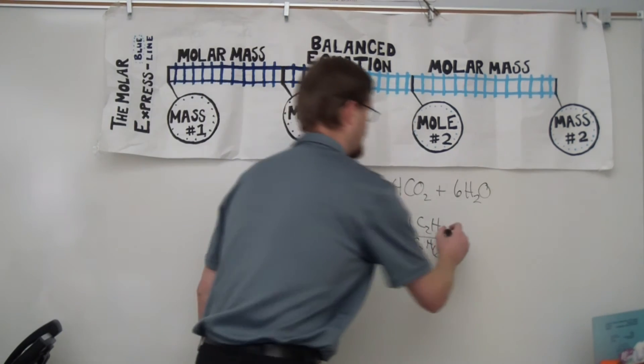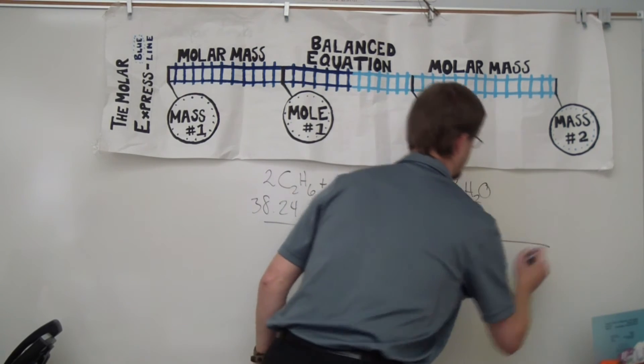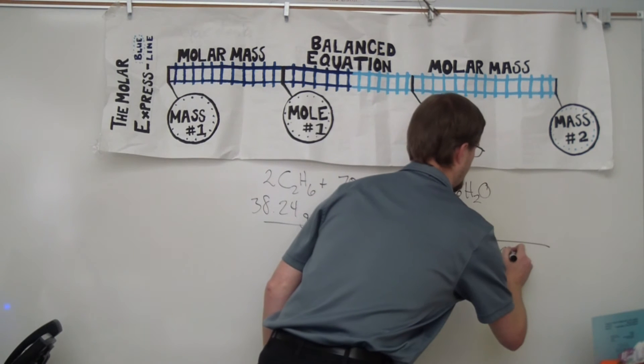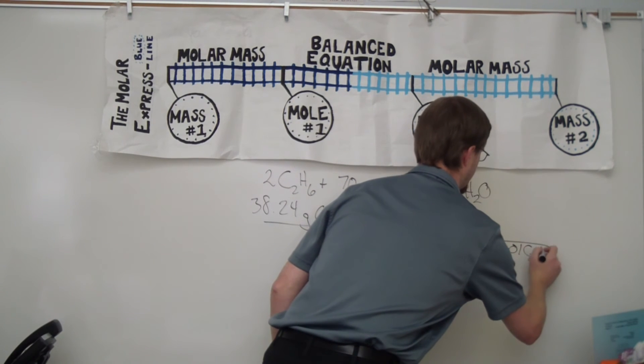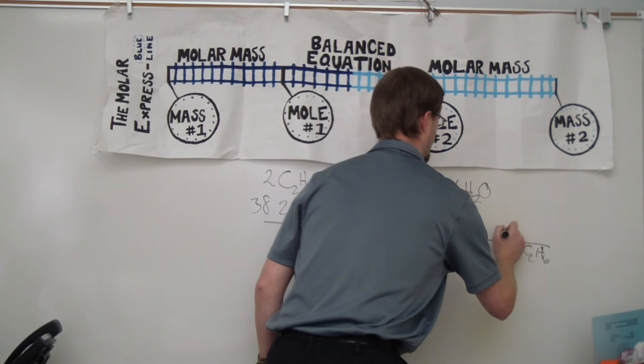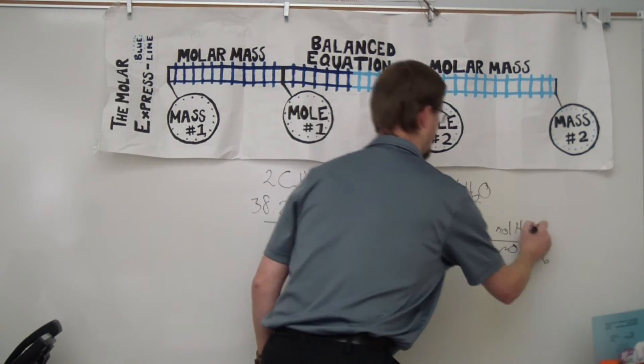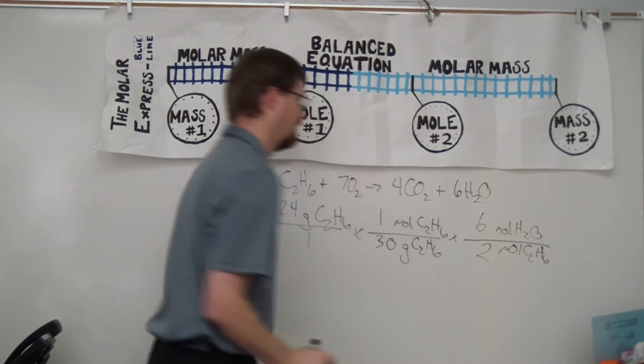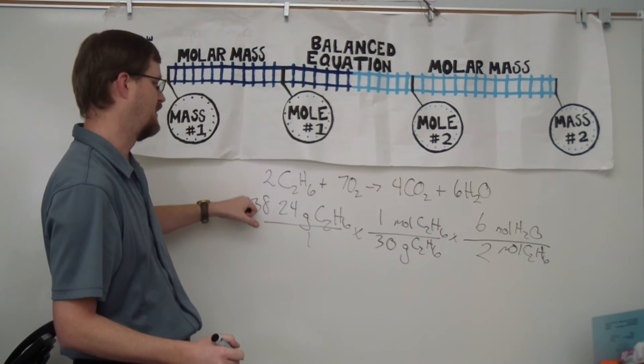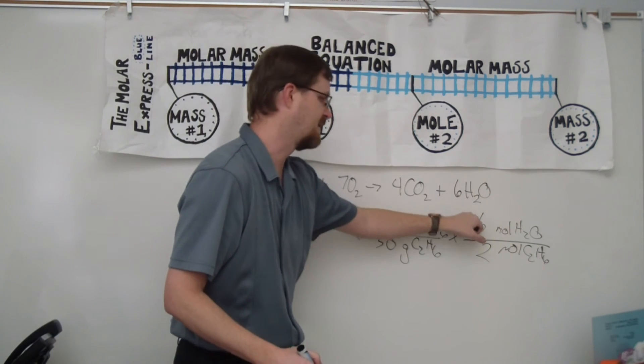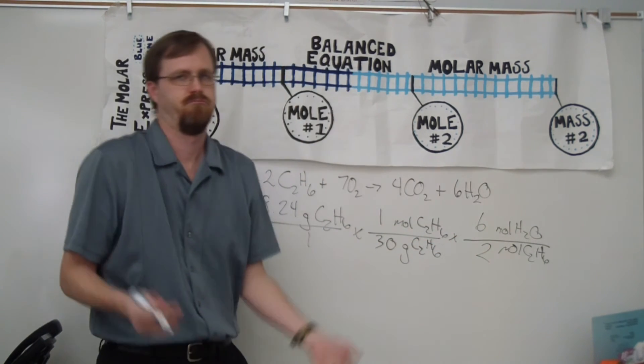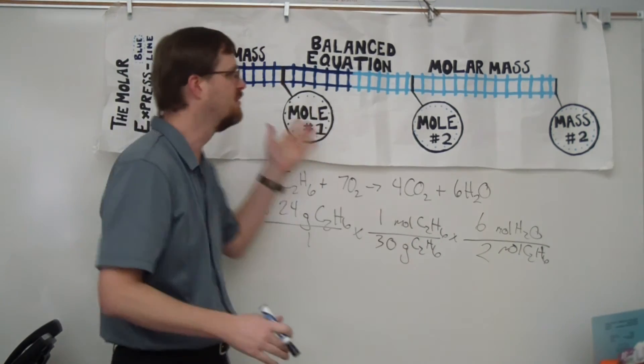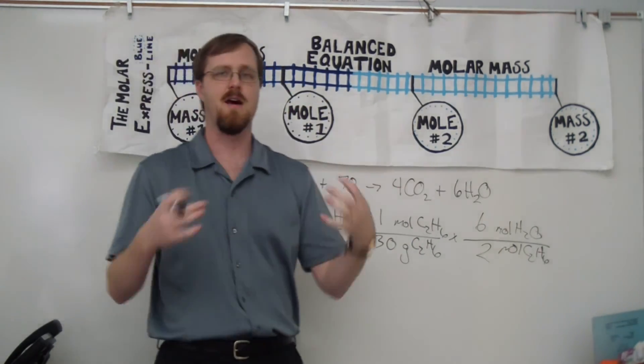And now I go to moles number two. And it's actually the exact same setup as I just showed you. So moles C2H6 goes on the bottom with moles of water on the top. And then I take my balanced equation, six over two. And then now it's 38.24 divided by 30 times six divided by two. That's stoichiometry right there. And that's kind of just how to use the molar express here and how to figure it out.